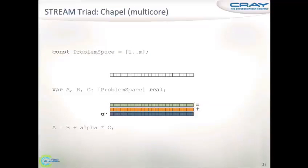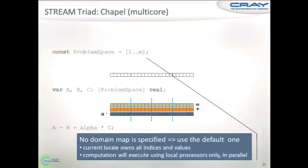If we squint a little bit at the Chapel stream code, we declare the index space and the arrays and run the computation. In this very first version there is no special source — the programmer just wanted to express at a high level what's going to happen. In that case, the compiler gives some reasonable default behavior — technically, a default domain map — which puts the whole thing on one locale and runs multi-core if that's available. There are parameters you can tune for how many tasks you throw at this.